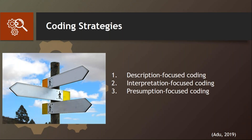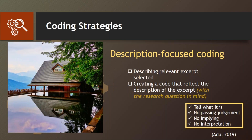There are many strategies you could use, but in my book I identify three main strategies: description-focused coding, interpretation-focused coding, and presumption-focused coding. Description-focused coding is all about describing relevant information in the data, then developing a phrase called a code to represent the description. You are just telling what you see or what the participant is telling you — not making any judgment, not making any interpretation, not implying anything. You are just describing what they told you.